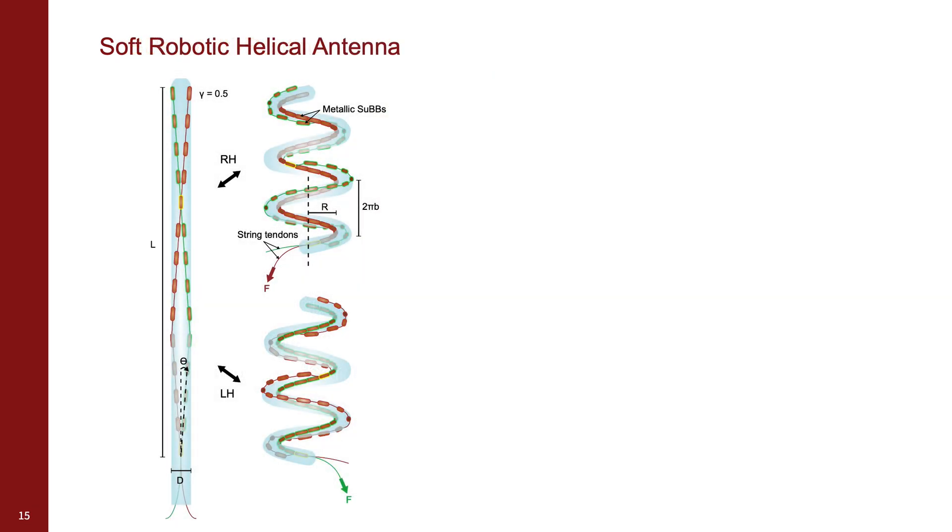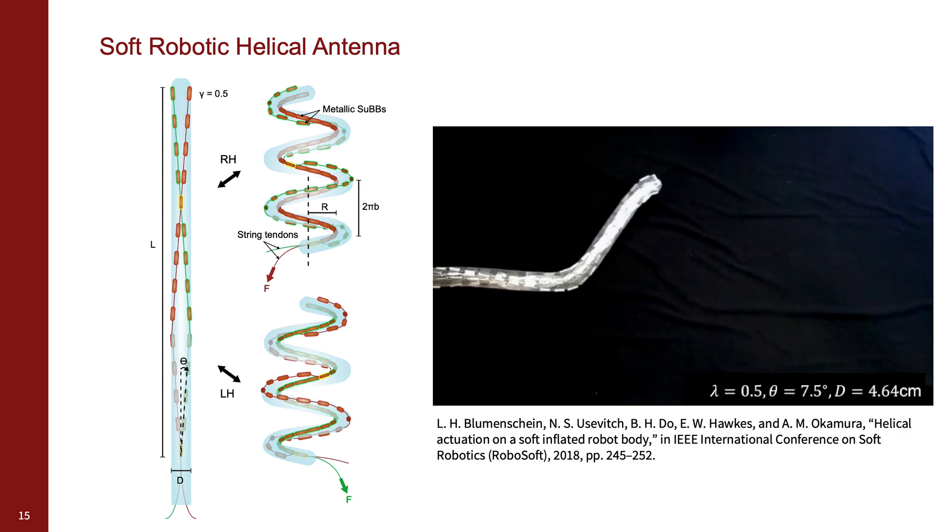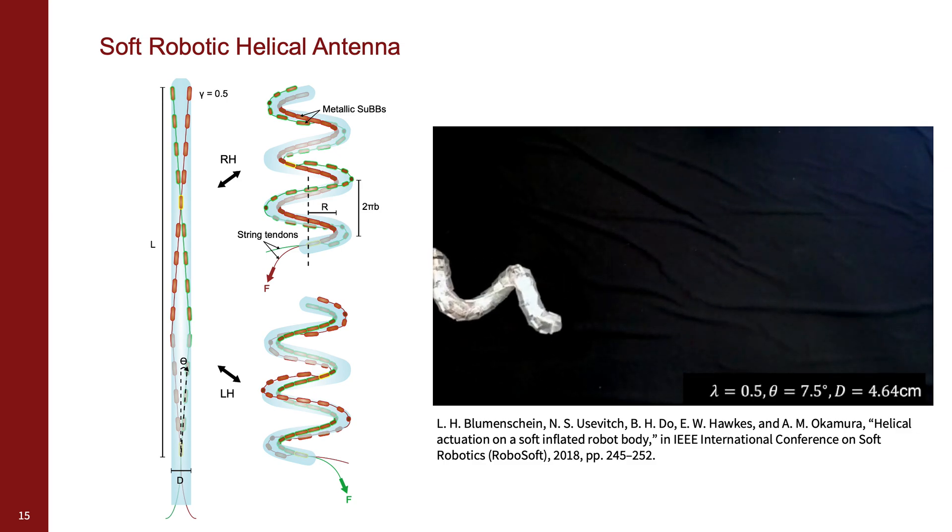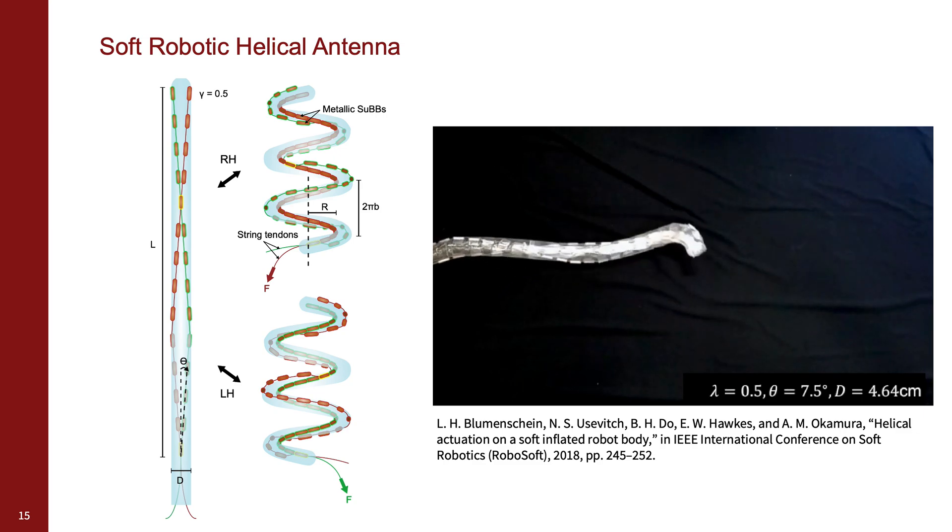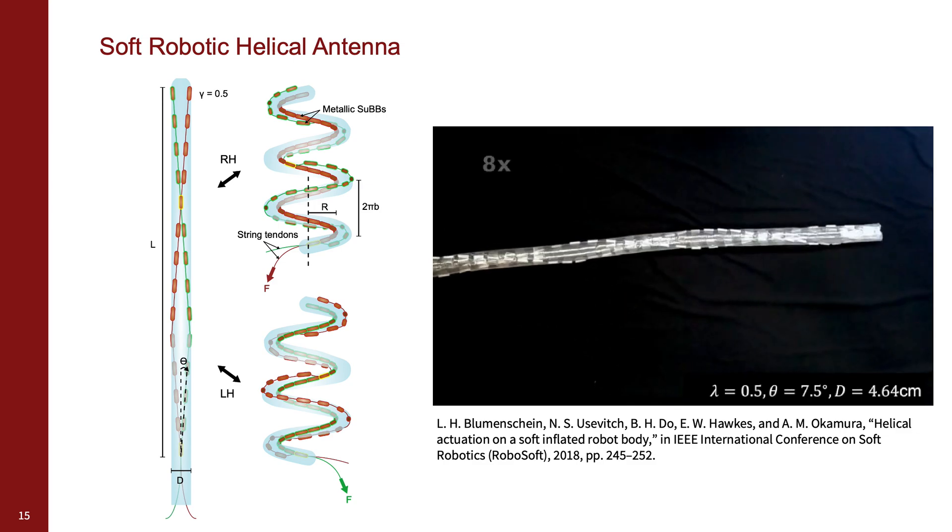With the design methods for the soft reconfigurable antenna in place, we now show how it could be used to create a handedness switching helical antenna. It has been shown previously that wrapping a tendon in a spiral around the robot will cause the robot to form a helix when the tendon is pulled, and the handedness of the formed shape matches the handedness of the tendon.